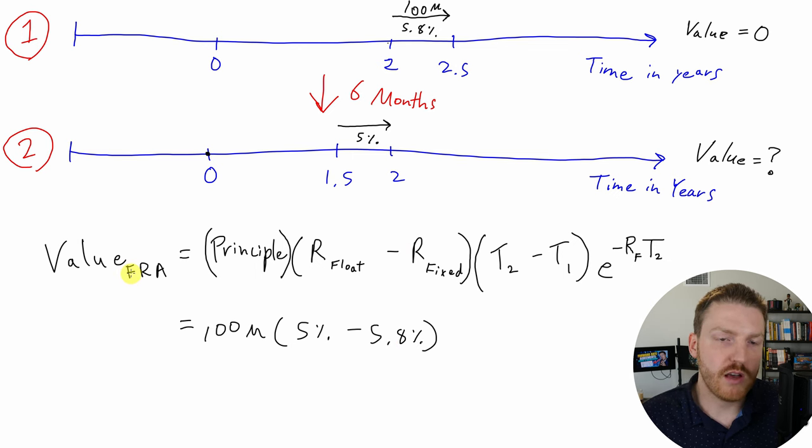Now, if we wanted to find the value of this FRA for the other side of the contract, so the bank that was our counterparty, all we would need to do is switch around these two in this formula, and we would have their value of the FRA. And so it's a zero sum game, whatever one side gains, the other side loses. So let's keep going.